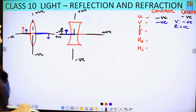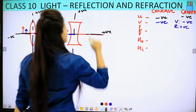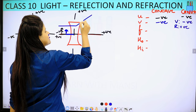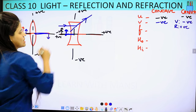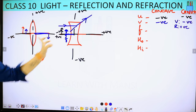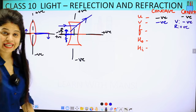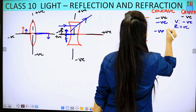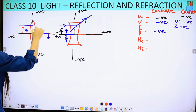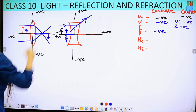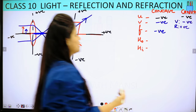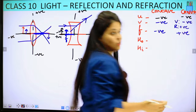Now for focal length: for the concave lens, when we draw the ray of light, it diverges and meets back on the same side as the object — that focus is on the negative side, so the focal length of a concave lens is negative. For the convex lens, parallel rays converge and the focus is on the positive side, so the focal length of a convex lens is positive.